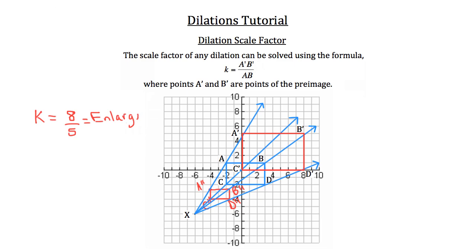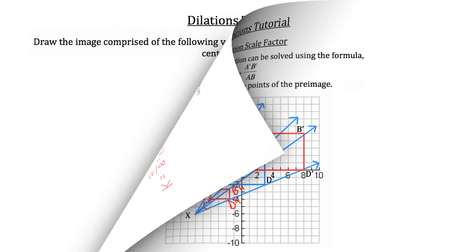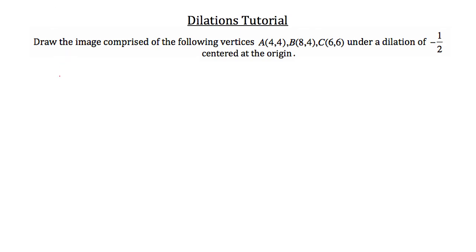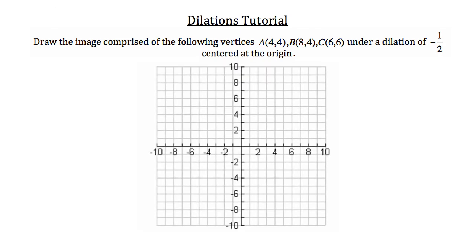That scale factor holds true for every side of the enlarged rectangle A'B'C'D'. Now let's look at how to solve a dilation when given only coordinate points and a scale factor. In this problem, we draw the image of triangle ABC under a dilation of negative one-half centered at the origin, so our K value is negative one-half.